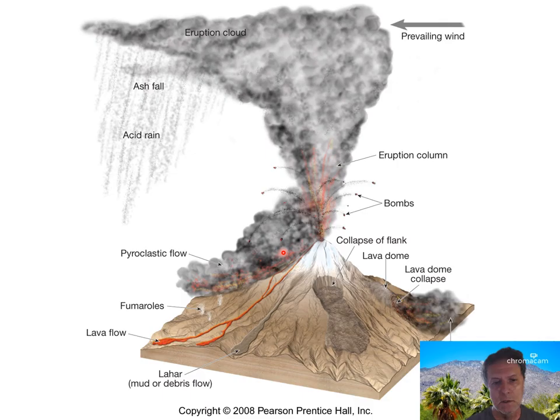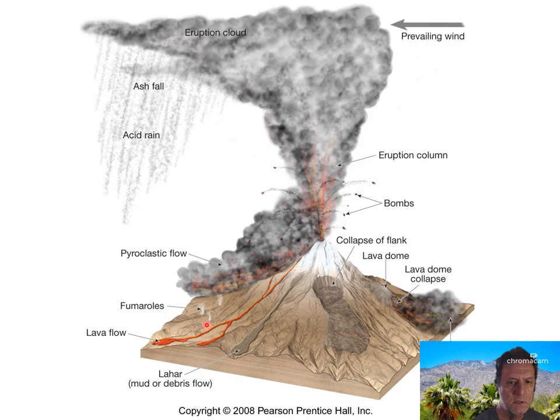Pyroclastic flows occur routinely in major eruptions from large, dangerous volcanoes. A fumarole is just a vent that vents out gases at various times on an active volcano.